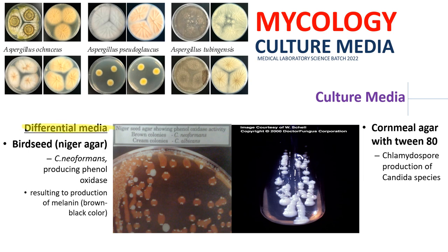Now we move to your differential media. First, the most well-known: Birdseed Niger Agar. This culture media isolates Cryptococcus neoformans, which produces phenol oxidase, resulting in the production of melanin or brown-black colonies. That is why it's called differential — colonies that do not produce brown-black colonies are not Cryptococcus neoformans. It follows the same principle as MacConkey Agar in bacteriology, which differentiates lactose fermenters from non-lactose fermenters. Birdseed Niger Agar differentiates Cryptococcus neoformans from other pathogenic fungi.